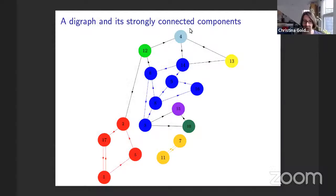There are some edges which are not useful for the strongly connected components, and there are some singleton strongly connected components. I hope the model is clear.